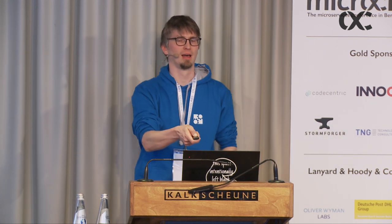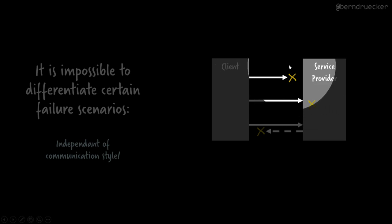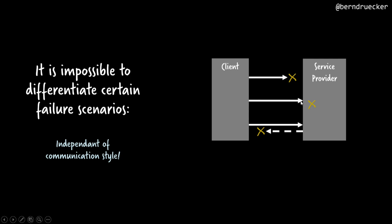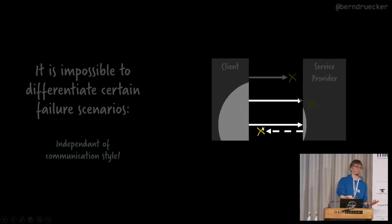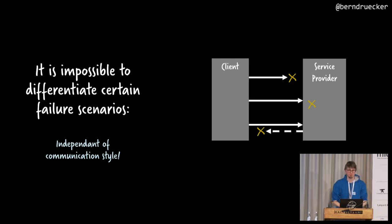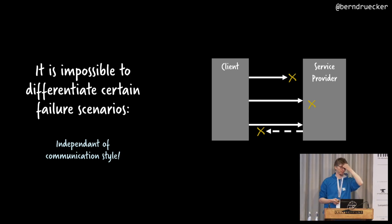Going back to distributed systems — there's another characteristic of this kind of network communication which is even worse. Whenever you do a REST call and get a network exception, you have no idea which of three failure scenarios just happened: either you never reached the service provider and the network was unavailable; you probably reached the service provider but it exploded during your request and you don't know if it committed; or it did everything perfectly, returned the response, and the response got lost in the network. You have no idea how to differentiate between these.